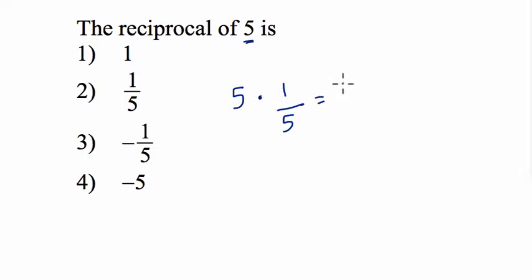Well 5 times a fifth, 5 times 1 is 5, right? You can think of 5 as 5 over 1 and 1 times 5 is also 5. And then 5 divided by 5 of course is 1, anything divided by itself is 1.